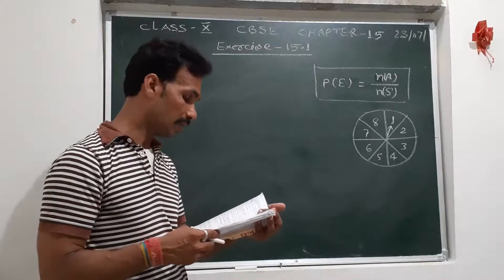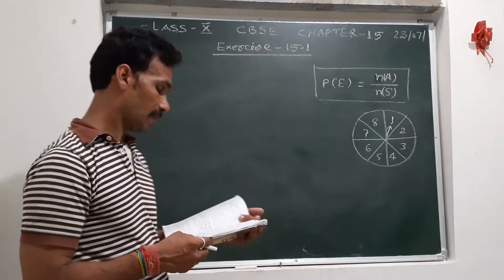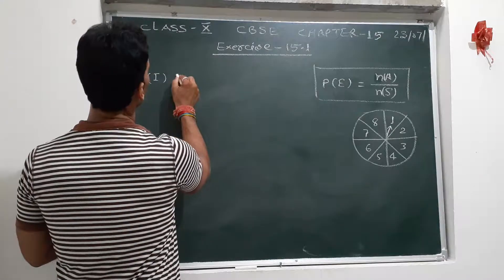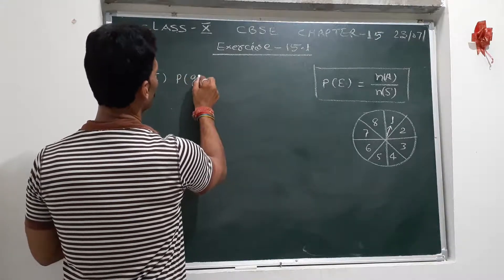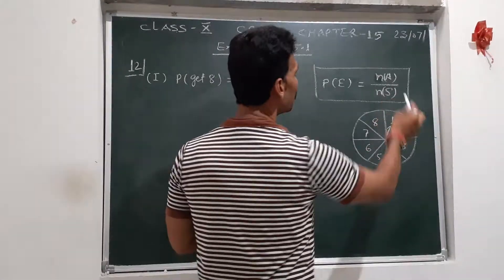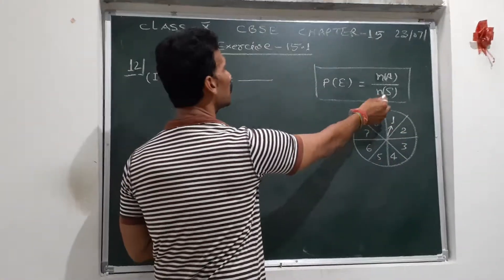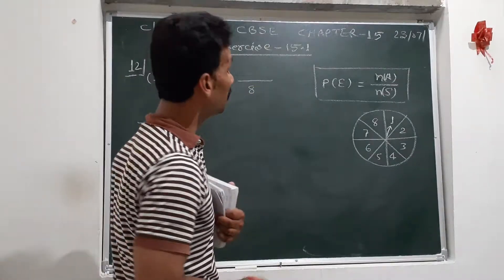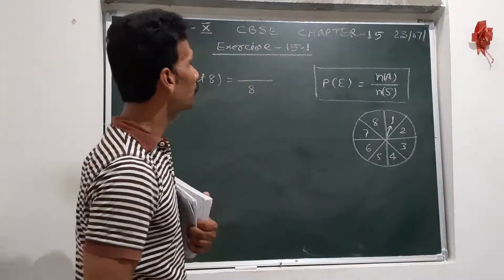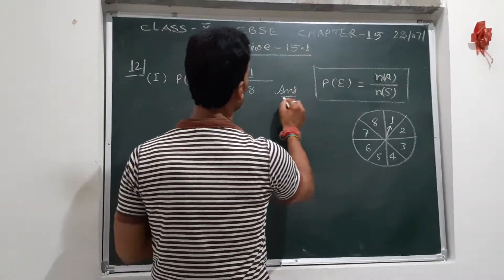These are equally likely outcomes. What is the probability that it will point at eight? Since all eight outcomes are equal, probability of getting eight - only one favorable case out of eight total cases. So the answer is 1 upon 8. That's the first one.